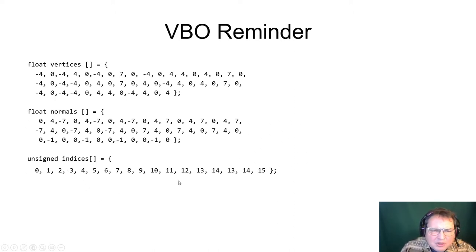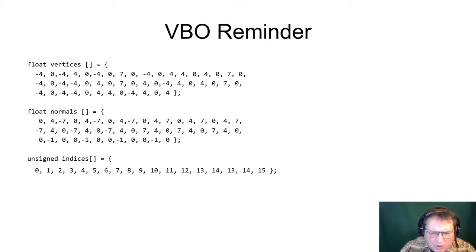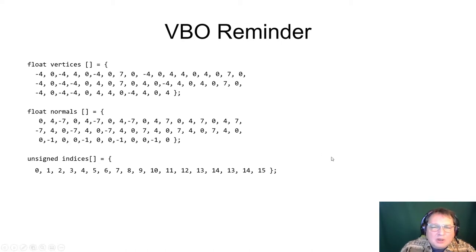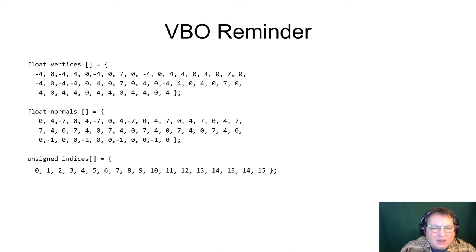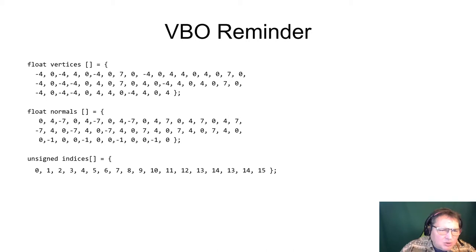The indices don't have to be consecutive numbers. That's one of the possible representations of 3D meshes. For more representations you can always watch the lecture about VBOs. Once you have defined this data, in a typical application it will not be stored within your source code — it will typically be loaded from a 3D mesh file, from an external file. The point is that you need to have provided data on the vertices, normals, and indices.